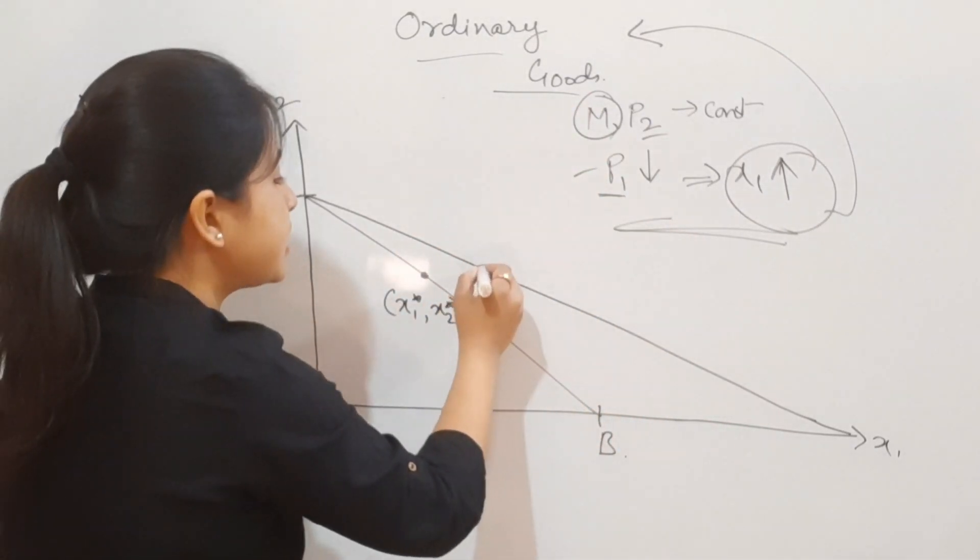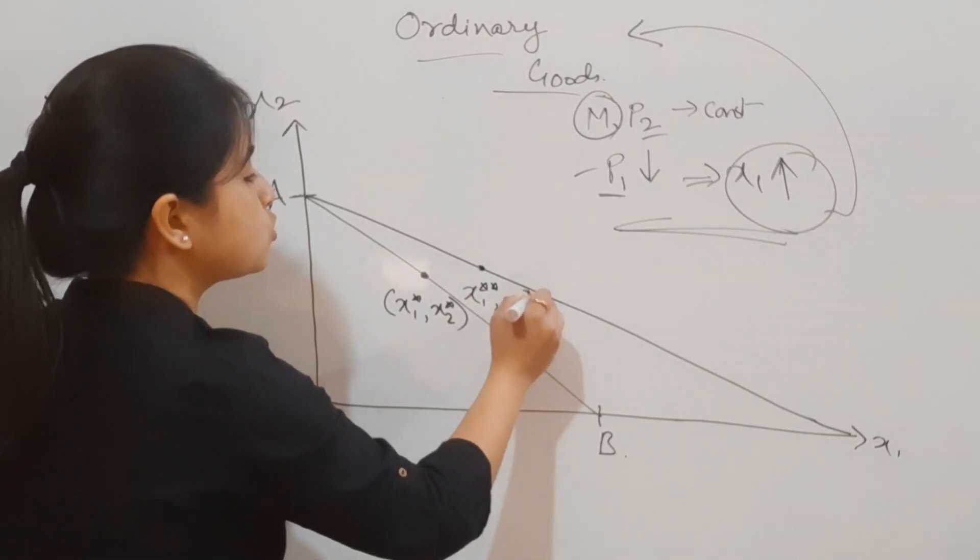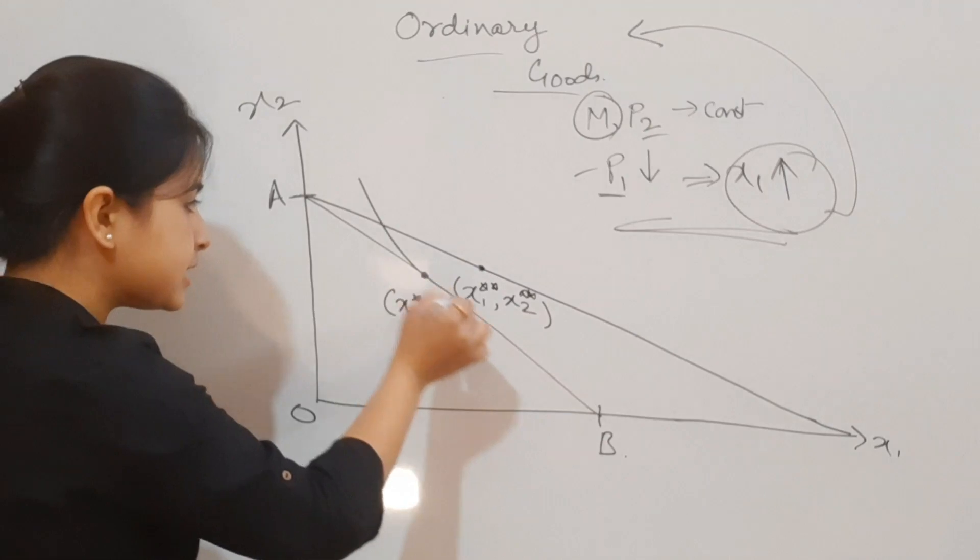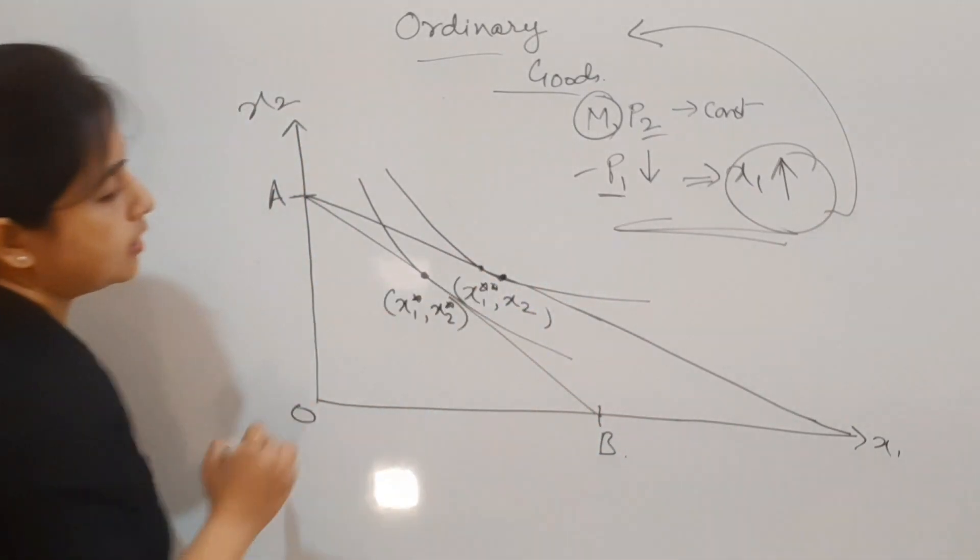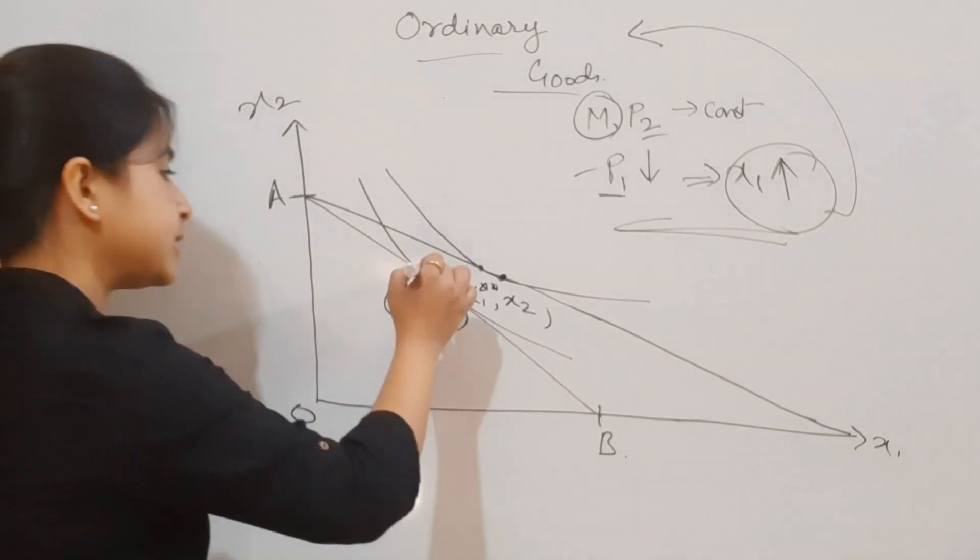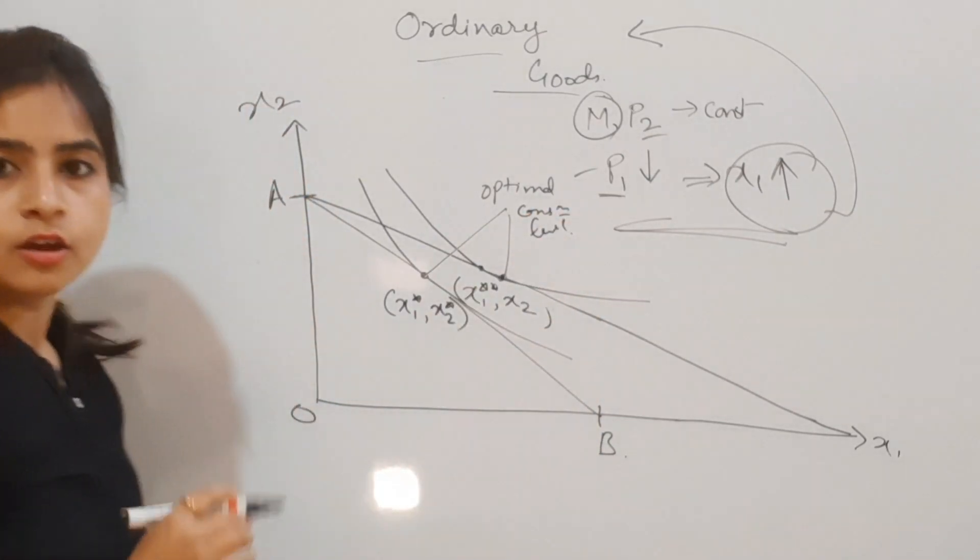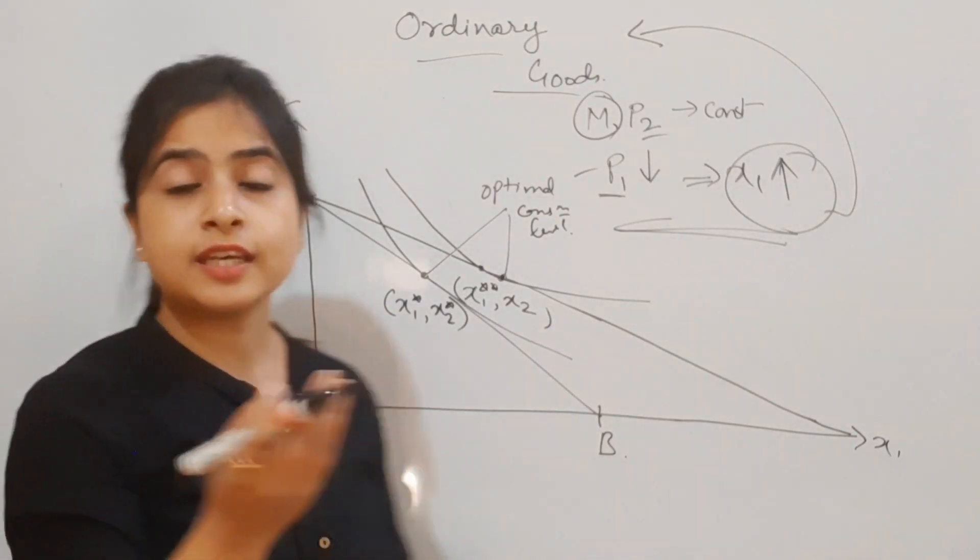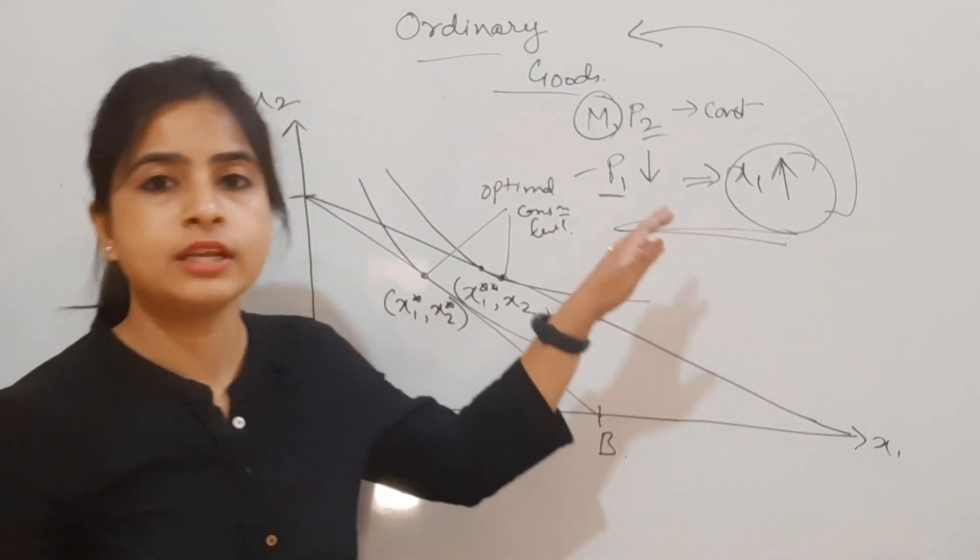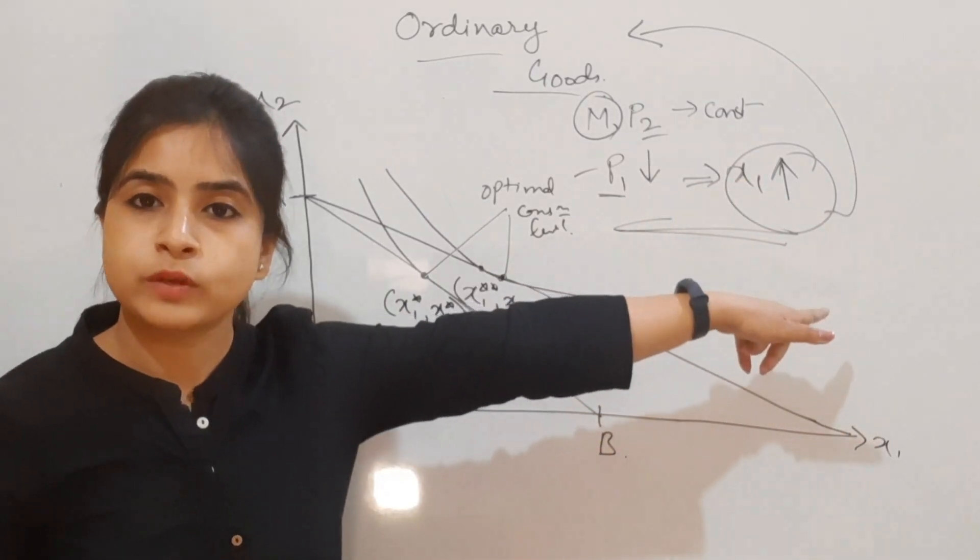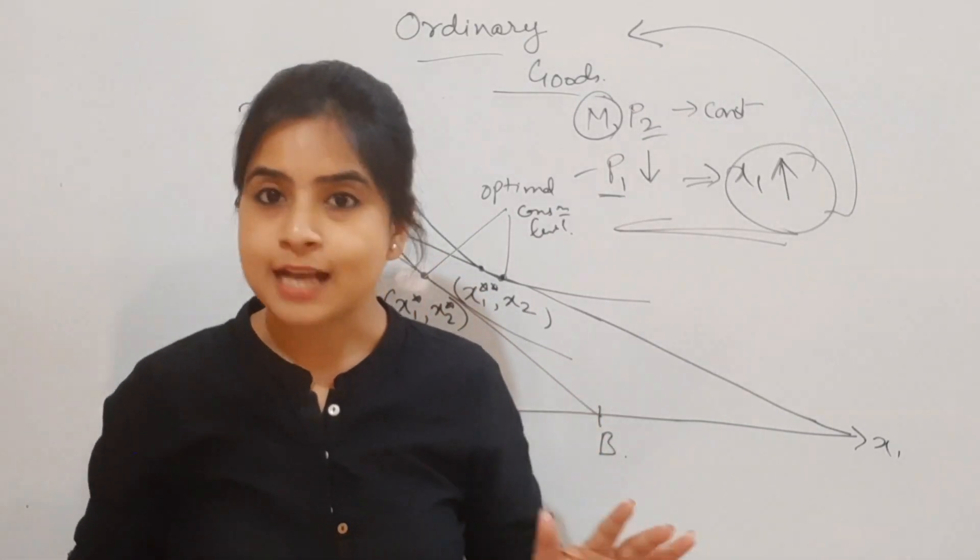The budget line will be flattened. Since the price of p2 isn't changing, the intercept won't change, but the budget line becomes flatter. The commodity x1 consumption will go up. The new optimal price is x1 double star and x2 double star. These are the two optimal points or optimal consumption levels.